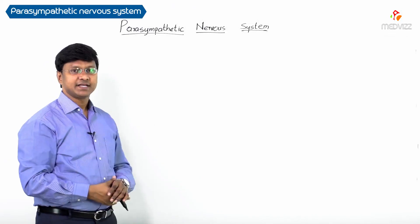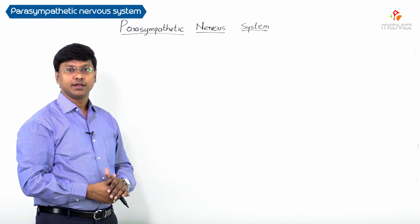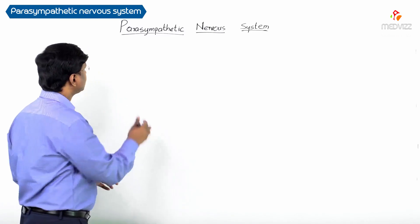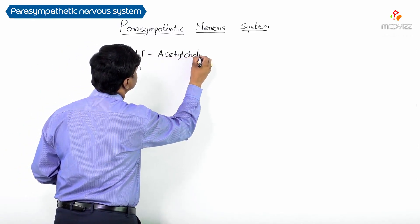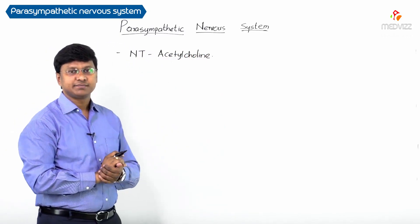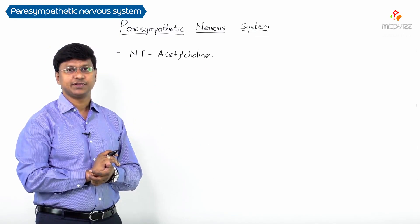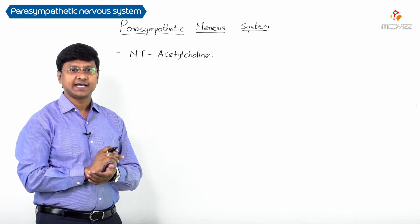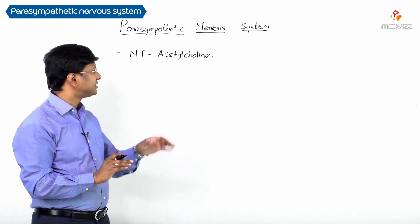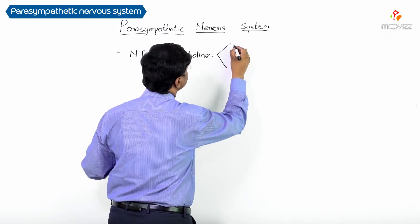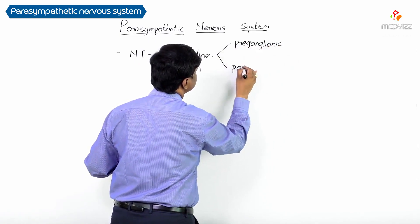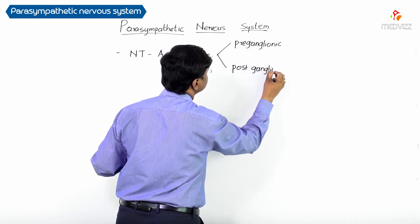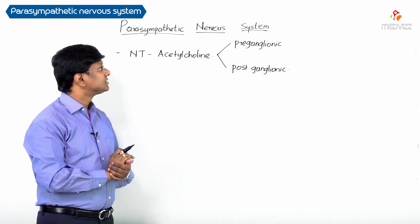Let me discuss the parasympathetic nervous system. The principal neurotransmitter in the parasympathetic nervous system is acetylcholine. For the parasympathetic nervous system, we have preganglionic fibers as well as postganglionic fibers, and in both of them the principal neurotransmitter is acetylcholine.